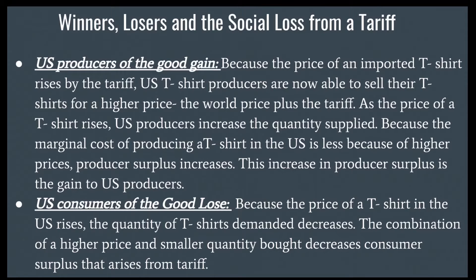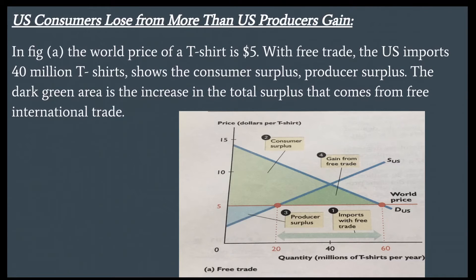U.S. consumers of the good lose. Because the price of a T-shirt in the U.S. rises, the quantity demanded decreases. The combination of a higher price and smaller quantity bought decreases consumer surplus. U.S. consumers lose more than U.S. producers gain. In Figure A, the world price of a T-shirt is $5. With free trade, the U.S. imports 40 million T-shirts. The dark green area is the increase in total surplus that comes from free international trade.